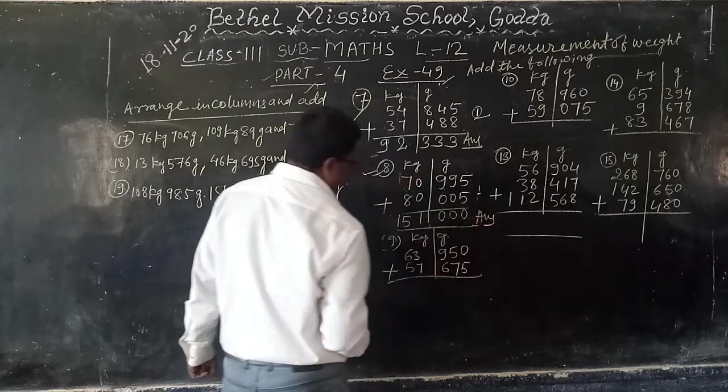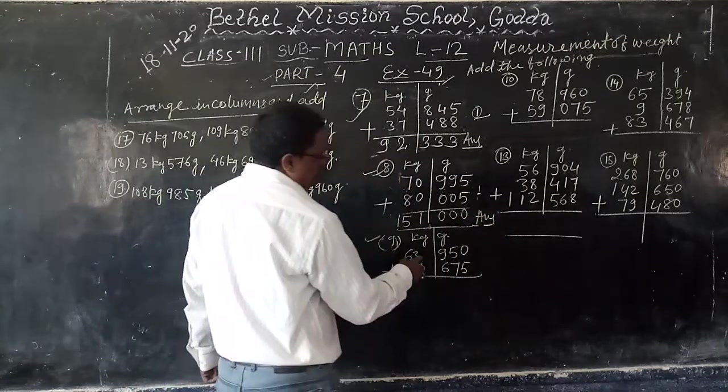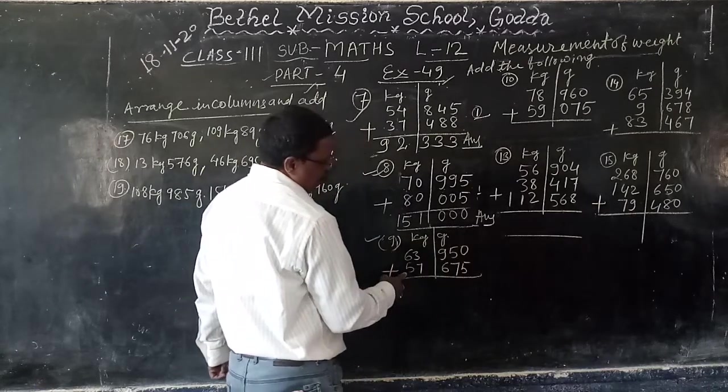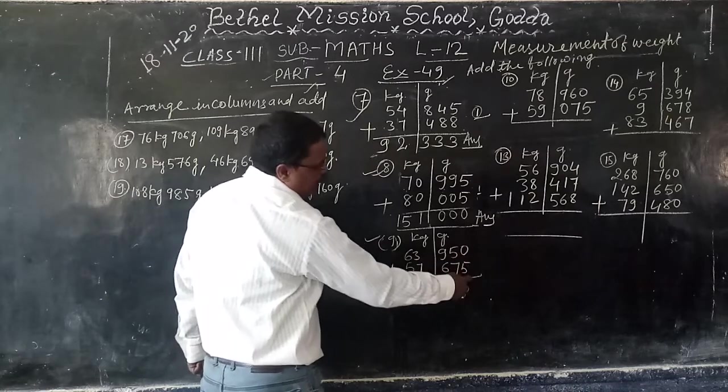9 number 63 kg, 950 gram plus 57 kg, 675 gram.